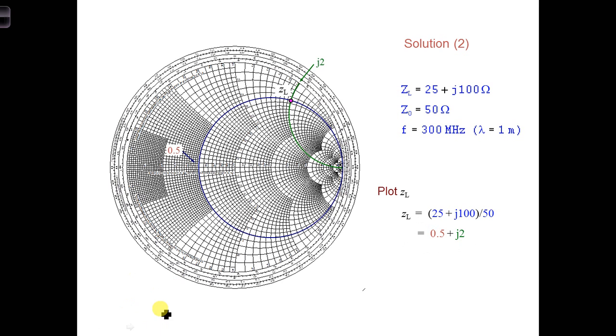We can do that by finding where the 0.5, r equal 0.5 circle, intersects the arc of j positive 2. So here is zl plotted on the Smith chart.